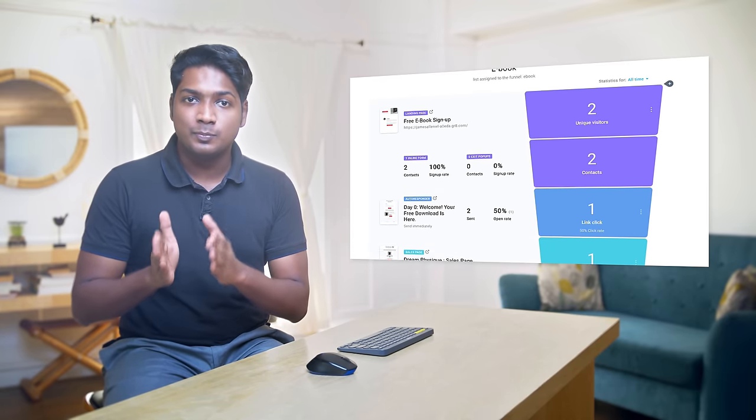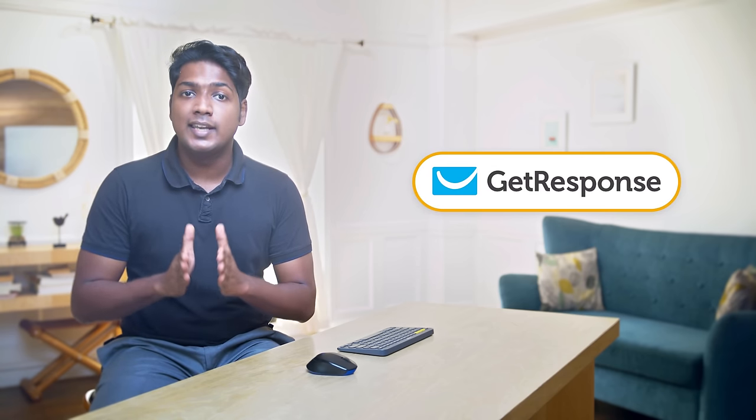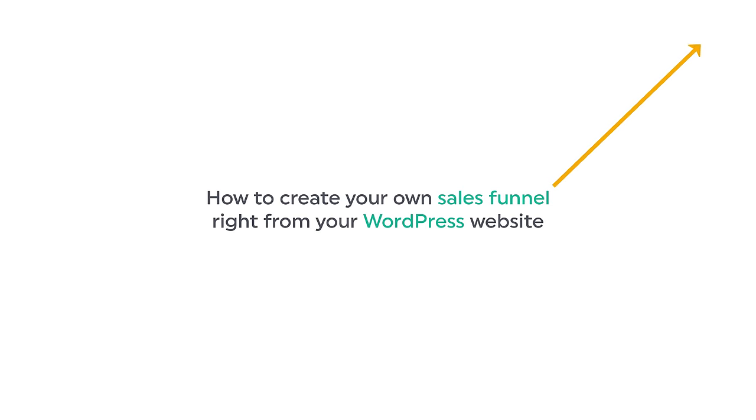Once you set up a sales funnel, we will see how you can track the number of people who have visited your site and purchased your product. In this tutorial, you will be learning how to set up a sales funnel using a tool called GetResponse. This tool will help you create the landing page, send emails, and do all the selling for you. If you're also interested in how to create your own sales funnel from your WordPress website, you can check out our sales funnel course. I'm Brian from Website Learners, and let's get started.